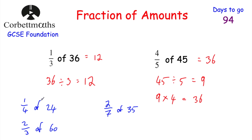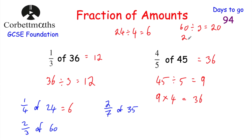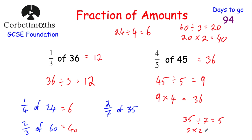A quarter of 24: divide by four, so 24 divided by four is six. Two thirds of 60: divide by three — 60 divided by three is 20 — then times by two, giving 40. Two sevenths of 35: divide by seven — 35 divided by seven is five — then times by two, giving 10. So two sevenths of 35 is equal to 10.